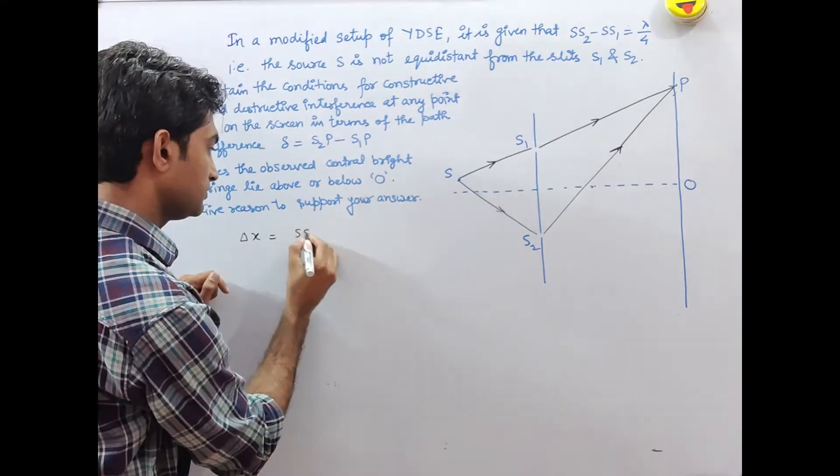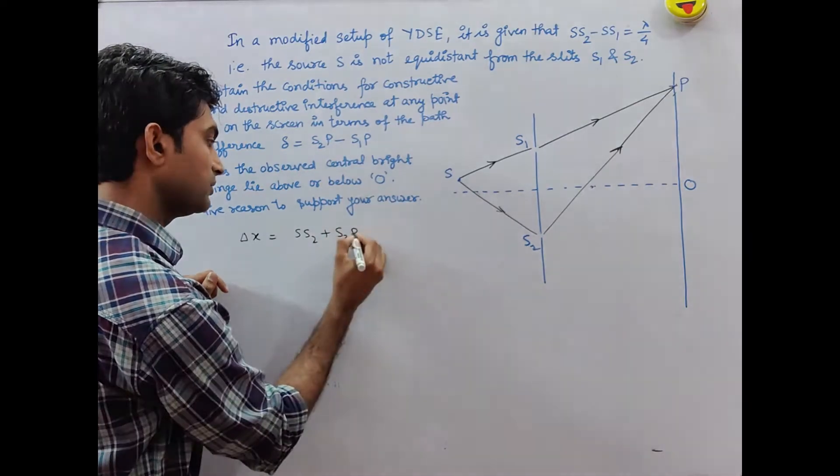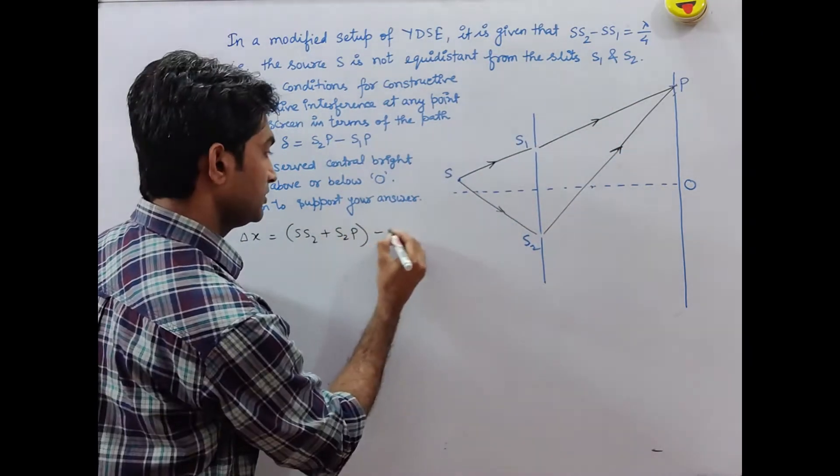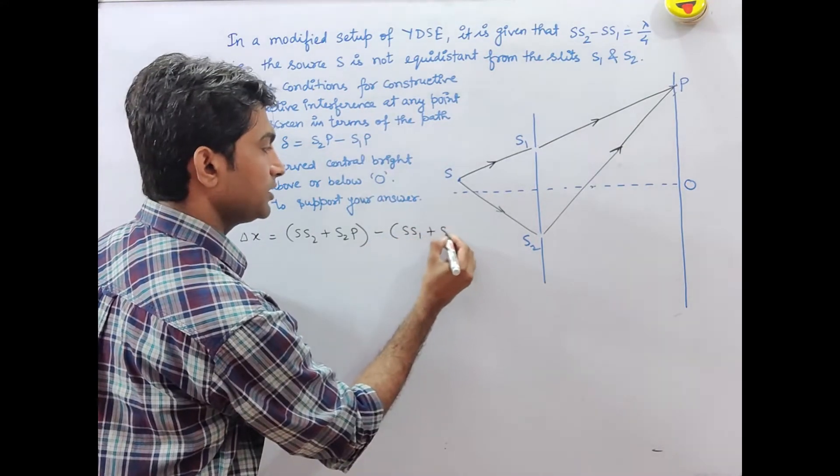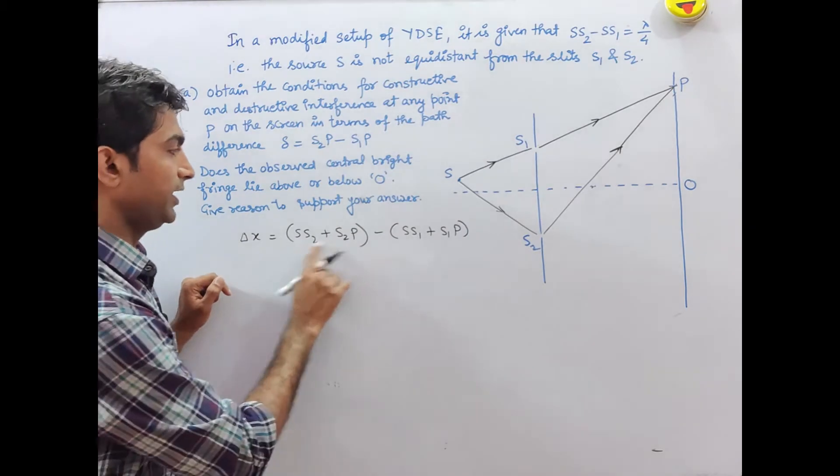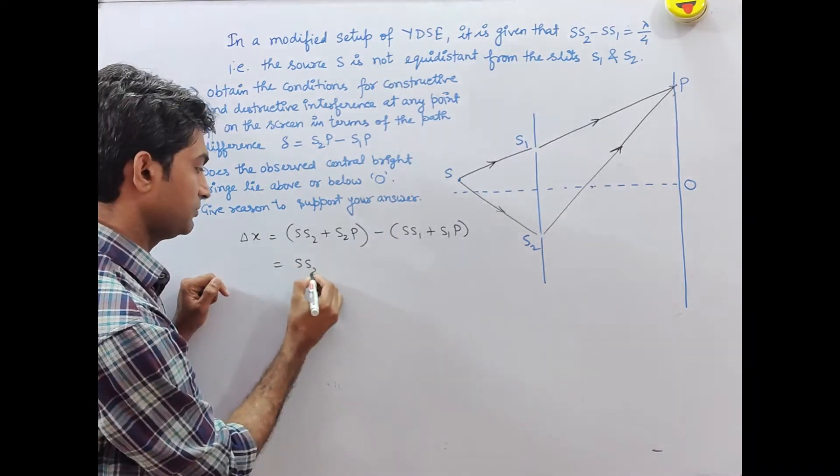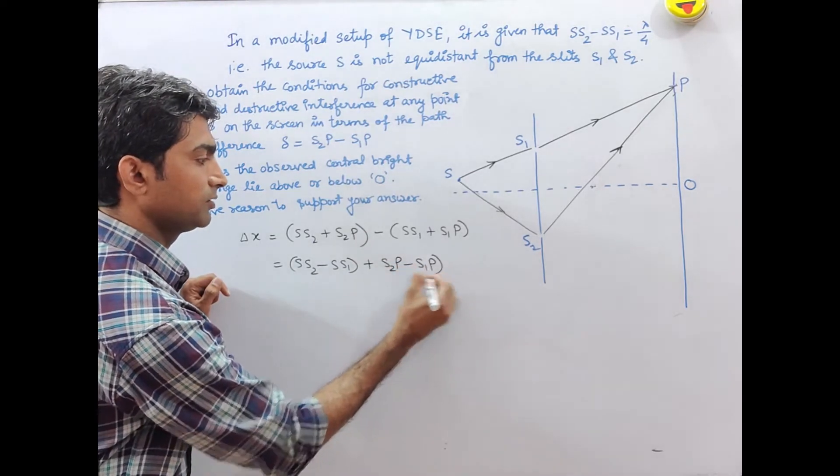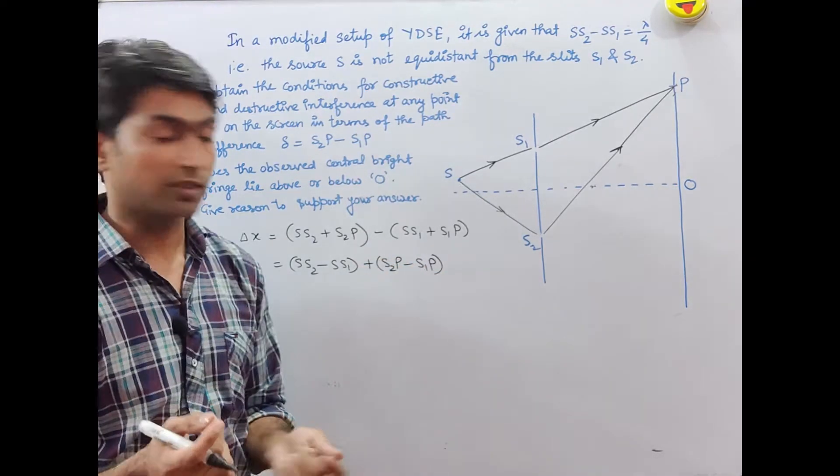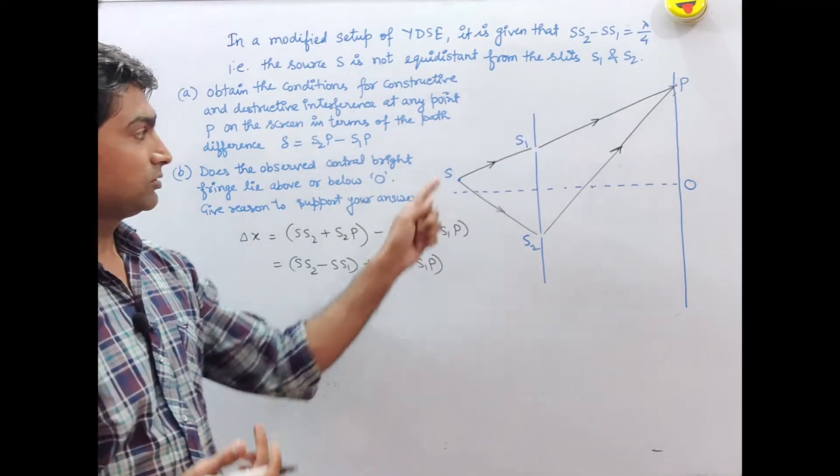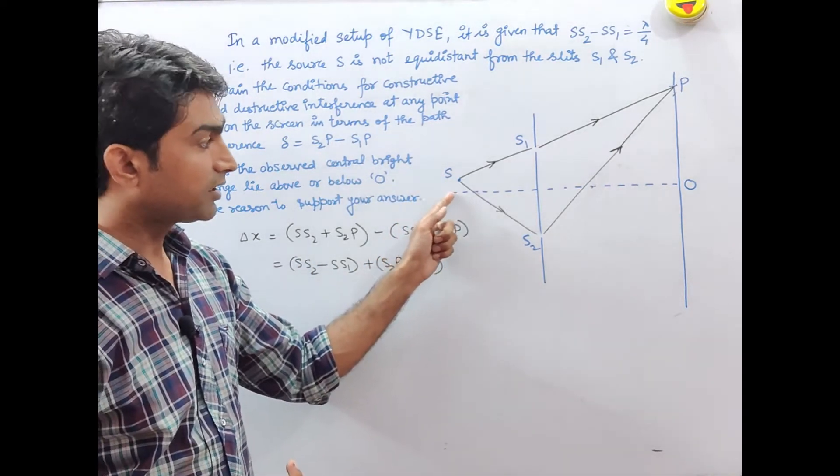SS2 plus S2P equals SS1 plus S1P. So the path difference is SS2 plus S2P minus SS1 plus S1P, which equals SS2 minus SS1 plus S2P minus S1P.